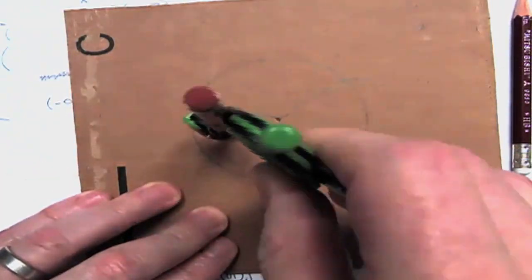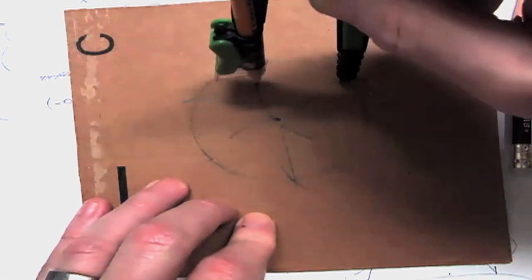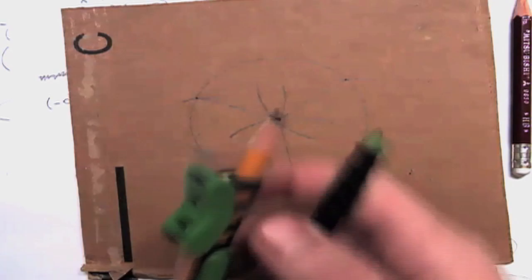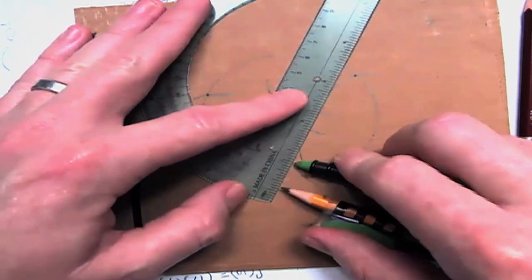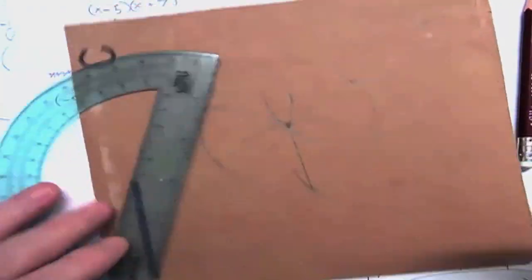So from here, keeping the same radius, swing an arc from each one of your pivot points through the center of the circle. We're going to use these later, at least the concave part.